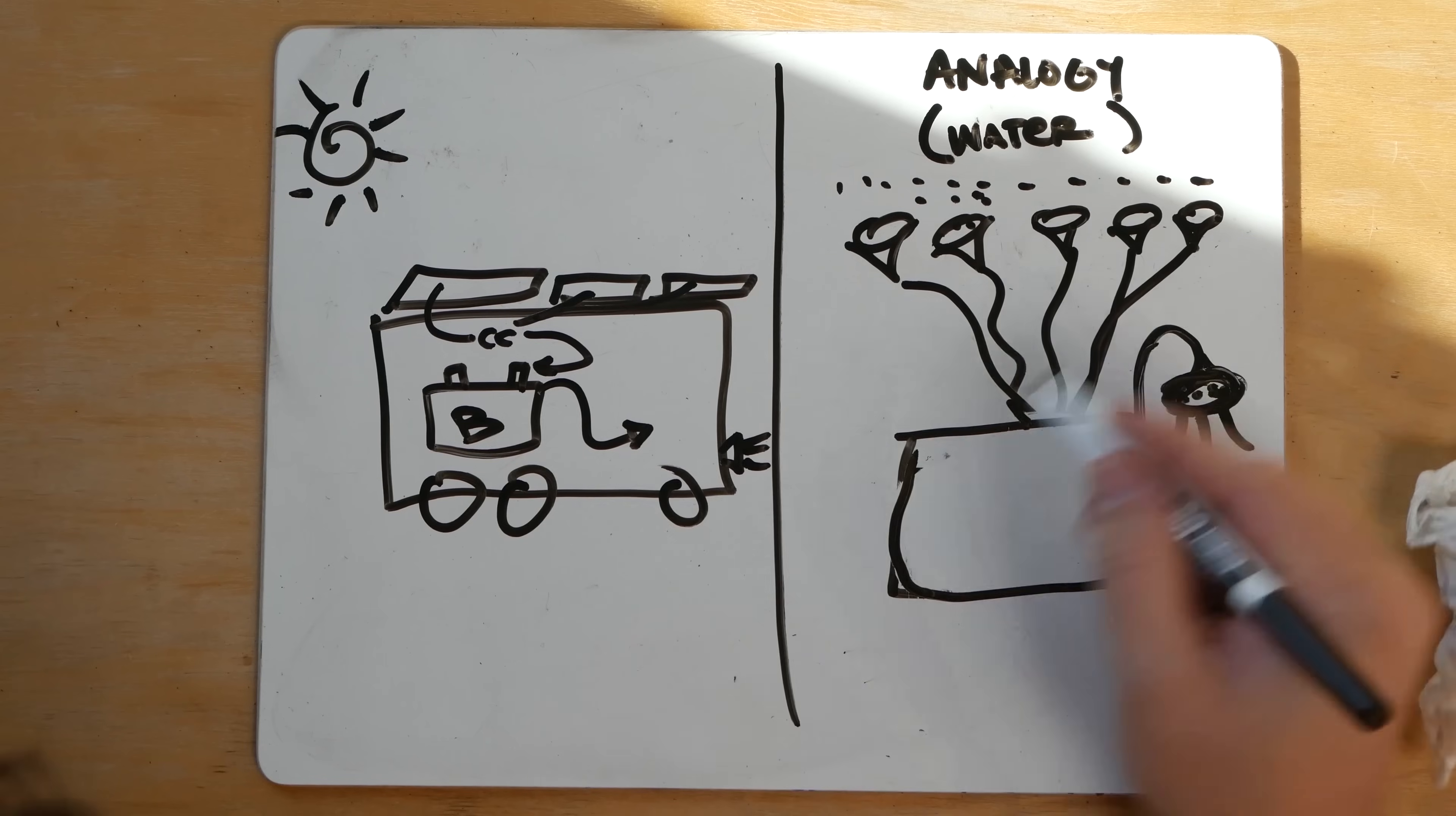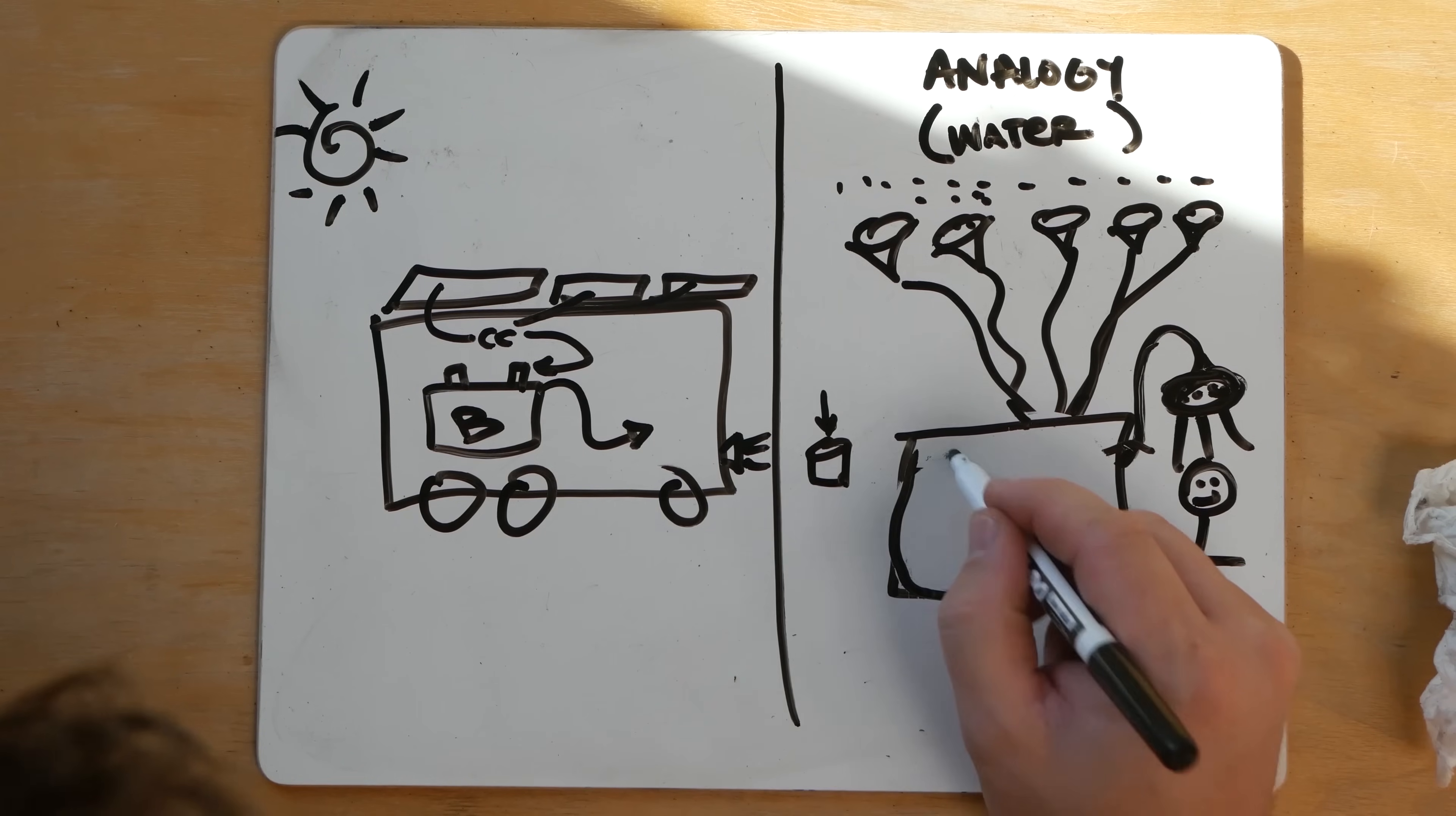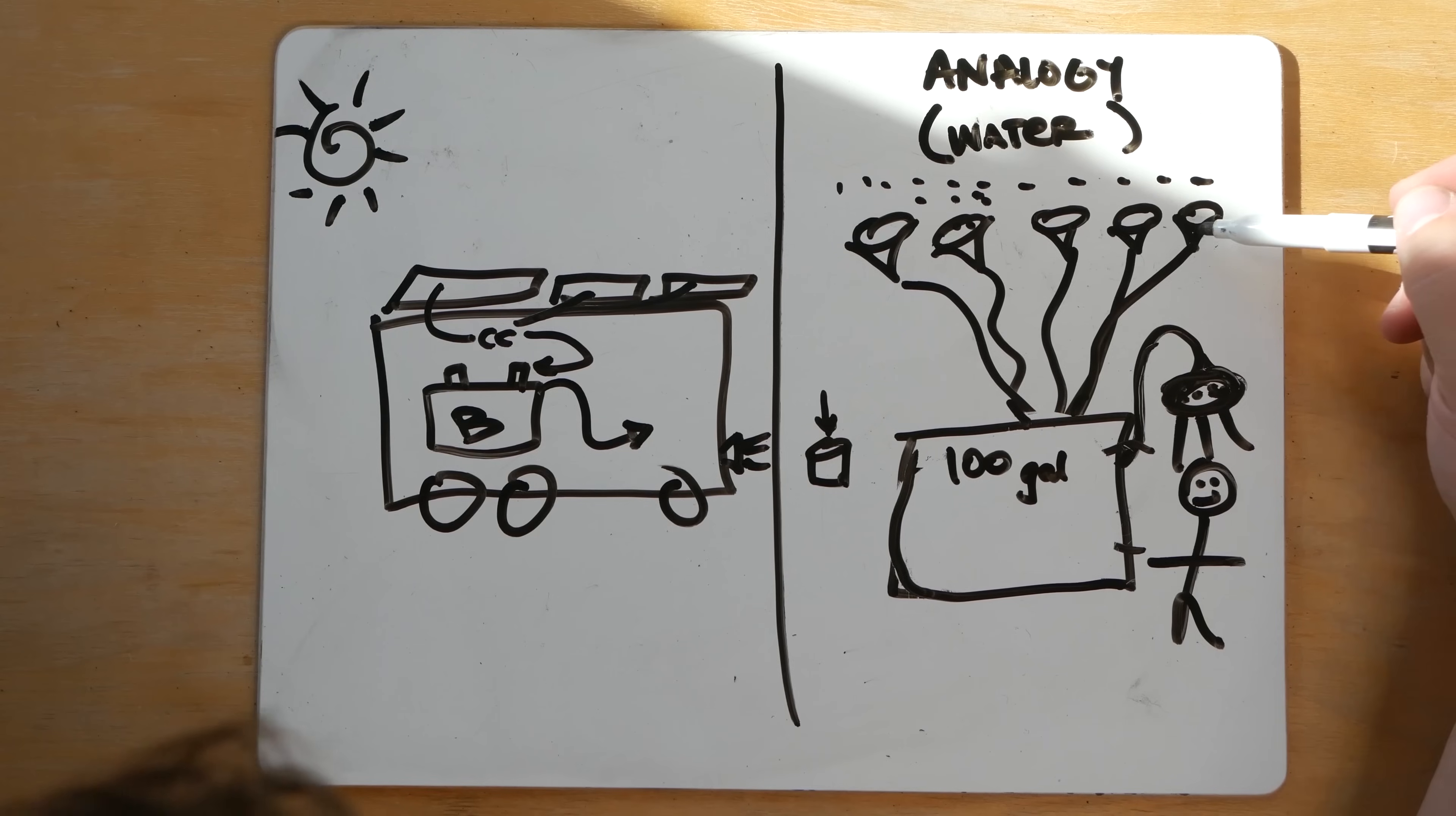Now before, with five panels, when we just had our little cup, this filled up fast. You know, that only took half an hour to fill it up. But now we have a hundred gallons to fill. Because of that, these can't possibly keep up, but they're trying their best.